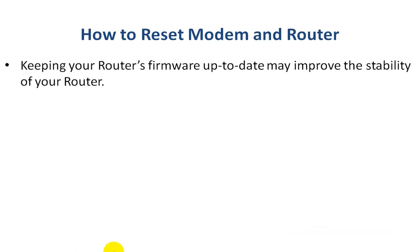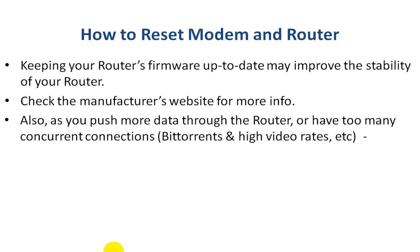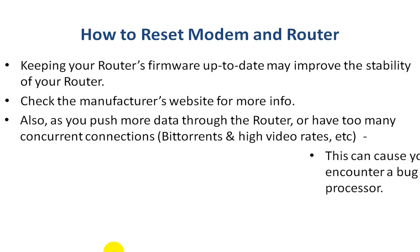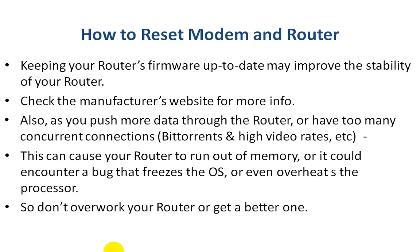Keeping your router's firmware up-to-date may improve its stability and prevent these problems from happening. Check your manufacturer's website for more info if you think this may be the case. Also, pushing a lot of data through the router — such as BitTorrent and high video download rates — or having too many concurrent connections can cause you to need to power cycle. What's happening is that it can cause your router to run out of memory, encounter a bug that freezes the OS, or even overheat its processor. So don't overwork your router, or get a better one that can handle the load.